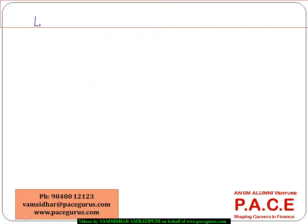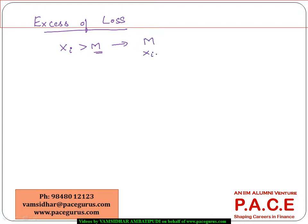On the other side, when I start looking at excess of loss based reinsurance, if you recollect — let's say X_i is the claim — what we talked about in excess of loss: if X_i is greater than some retention level M, the insurer would be paying only M and the reinsurer is going to pay X_i minus M, whatever the difference is. But if X_i is less than M, the insurer is going to pay the full amount X_i and the reinsurer is going to pay 0.